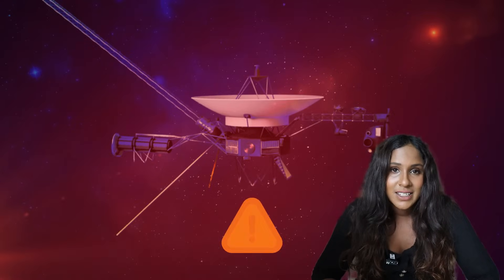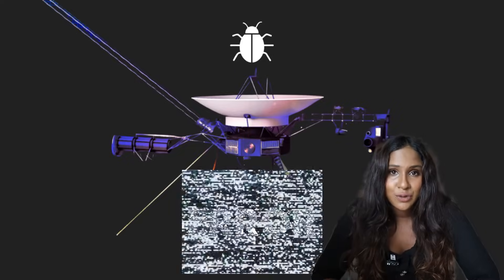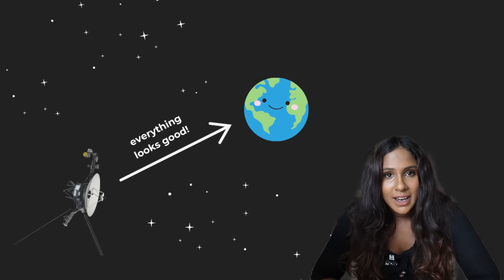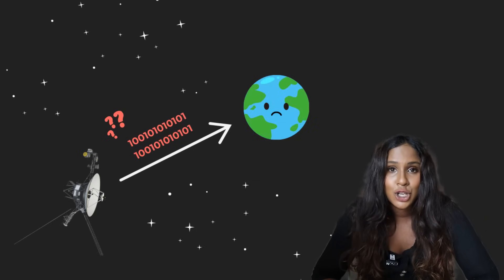NASA engineers suddenly realized that Voyager 1 may have developed a software bug. Because all of a sudden, Voyager 1's normal science and engineering data transmissions suddenly started to make no sense. It became unintelligible. No one could understand what it was transmitting. And fixing this issue isn't so easy. But this is a story of how NASA engineers,